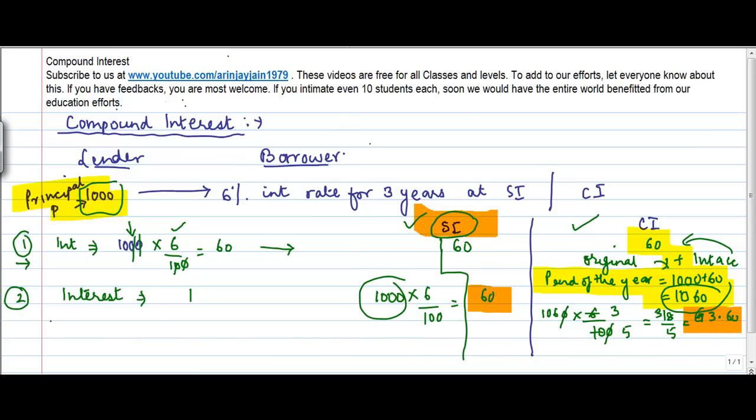Similarly, for year three, the computation for simple interest remains the same. But for compound interest, the principal for compound interest purpose becomes the principal in the beginning, which was 1060.